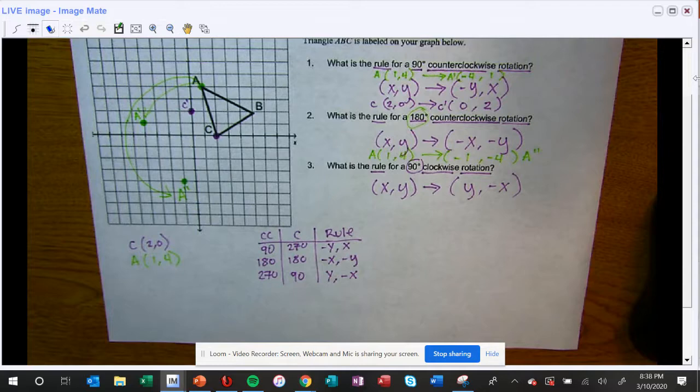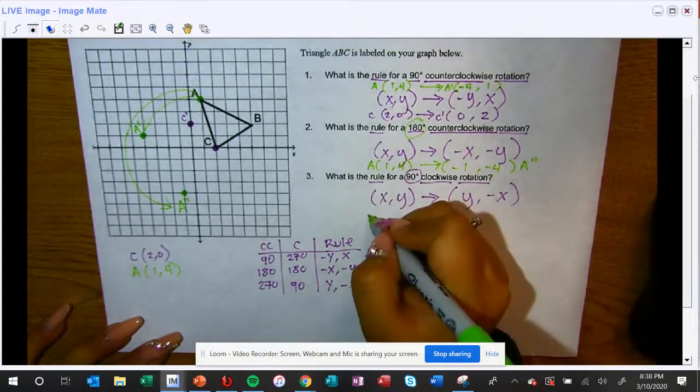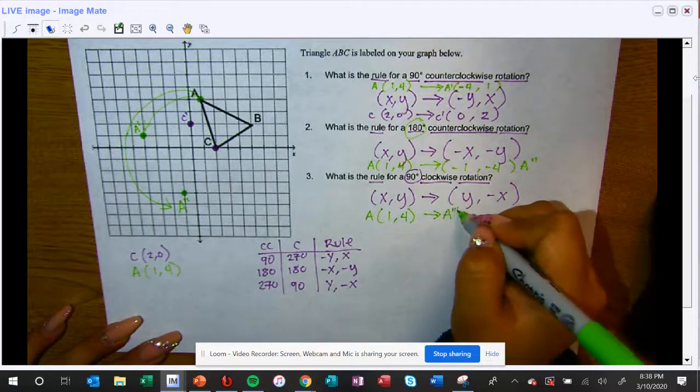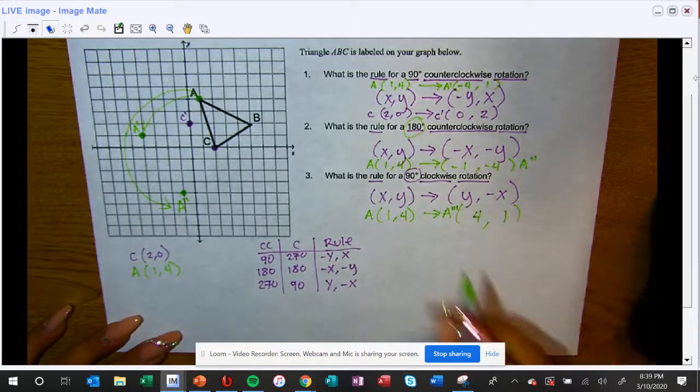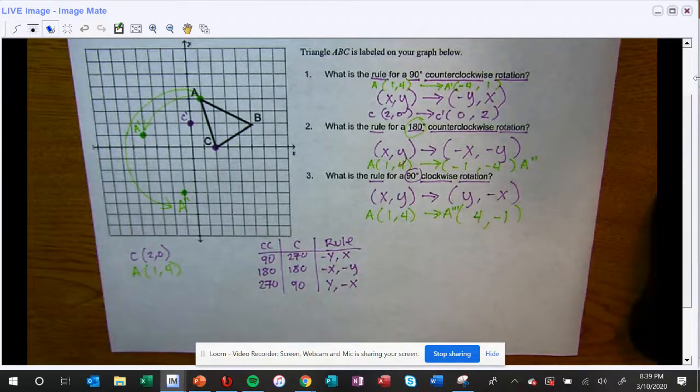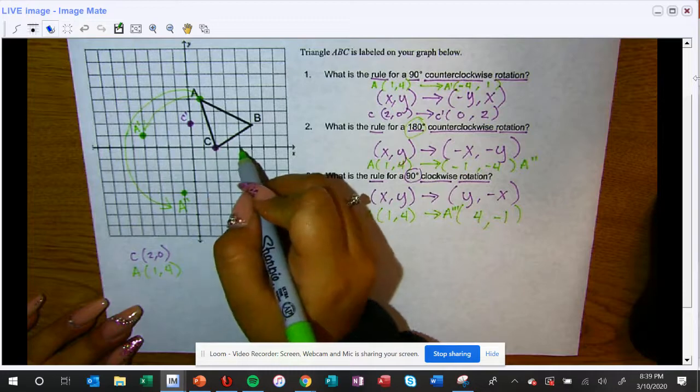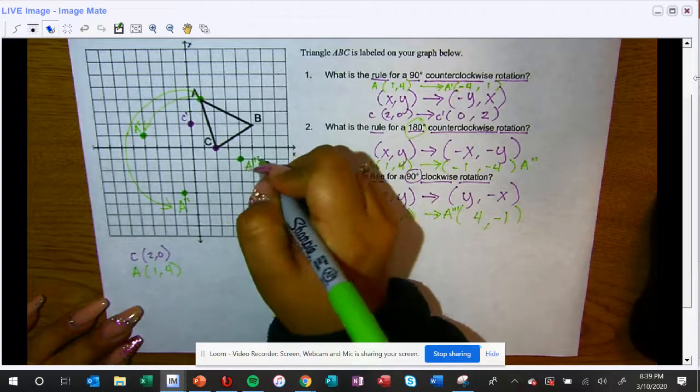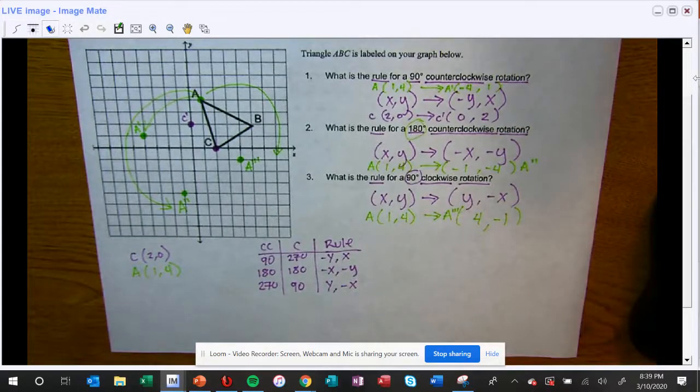Finally I am going to do it with the 90 degrees clockwise rotation, still using the same point one comma four. This is going to be triple prime. The X and the Y switch, and now this one is the one that you need to switch to either: if it's positive make it negative, if it's negative make it positive. So now I'm going to plot this point at four comma negative one. That is A triple prime, and that is when I've rotated one time clockwise.